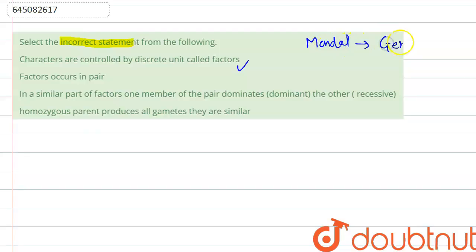gene as a factor. These factors are the reason behind controlling a character, so these factors control the character. Factors control the characteristic or character.